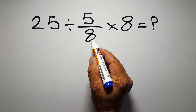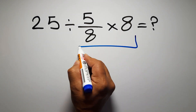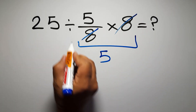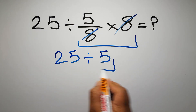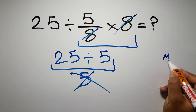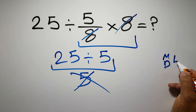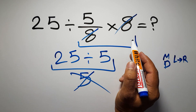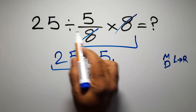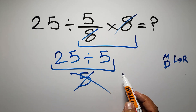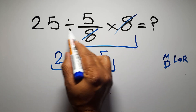First we do this multiplication: 5 over 8 times 8. We can easily cancel this 8 and this 8, so we have just 5, and 25 divided by 5 is just 5. But this answer is not correct, because according to the order of operations, multiplication and division have equal priority and we have to work from left to right. That means first we have to do this division, then this multiplication. If you do this multiplication before this division, it is wrong.